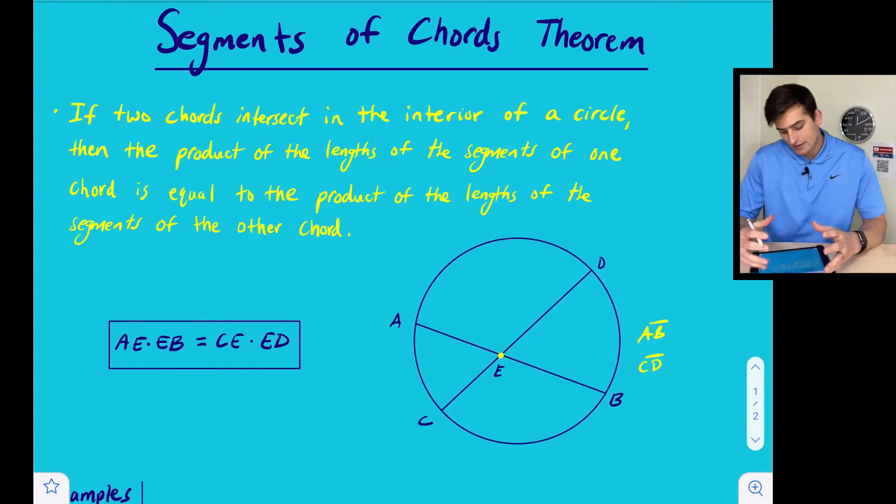So if we think about these two chords being separated into four segments of a chord, we have a segment here, we'll call this segment one, AE. Segment two would be EB. So what we're going to do is we're going to multiply those two segments together.